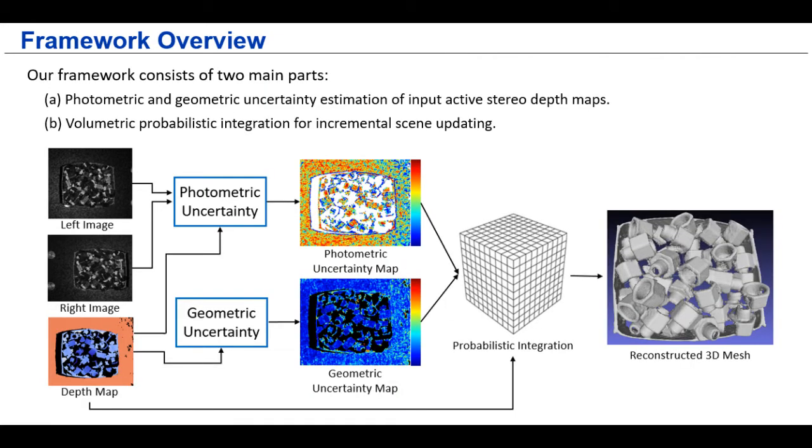Here is the overall pipeline for our depth fusion work. And because of the importance of the active stereo camera in robotic bin picking, we put the focus on such camera and model both photometric and geometric uncertainties. The estimated uncertainties are then incorporated into a probabilistic volumetric fusion framework for the incrementally updating of the scene.